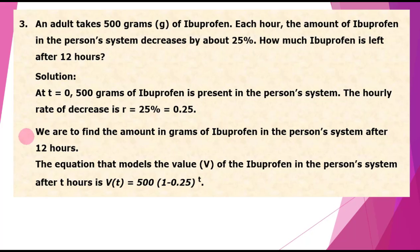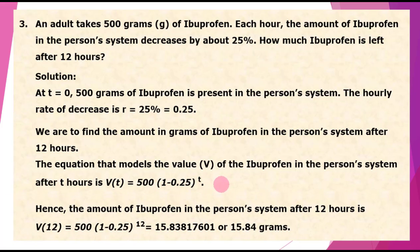We are to find the amount in grams of ibuprofen in the person's system after 12 hours. The equation that models the value V of the amount of ibuprofen after T hours is V(T) equals 500 times the quantity 1 minus 0.25, raised to T. Substituting T equals 12, we find V(12) equals 500 times the quantity 0.75, raised to 12.